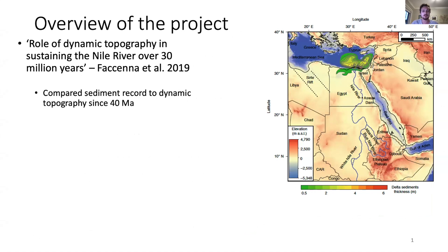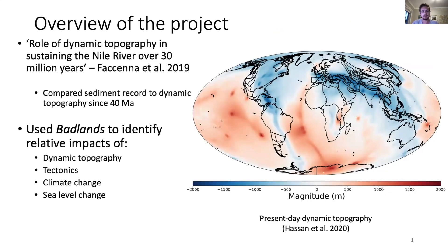The inspiration for this project was the publication of a paper which looked at the correlations between the sediment record of the Nile River and the dynamic topography of northeast Africa over the last 40 million years. We thought we could use Badlands to perform more quantitative measurements to identify the relative impacts of factors such as dynamic topography on the evolution of the Nile, as well as tectonics, climate change and sea level.